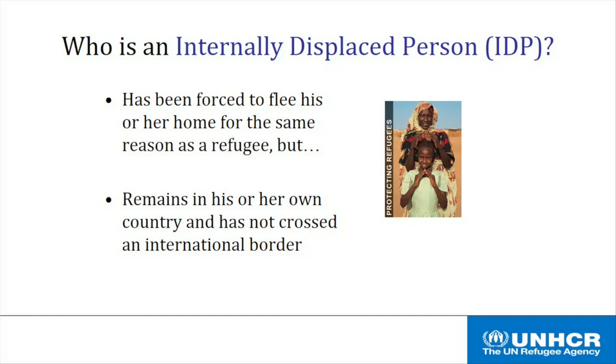Let's talk briefly about people who are uprooted from their homes and have the same fears that refugees have, but for one reason or another haven't crossed an international border. These are what we call internally displaced persons, or IDPs. IDPs are still inside the borders of their home country, but are very much like refugees in other ways, and they likewise need protection and assistance. Because IDPs are still in their home country, that country is responsible for ensuring their rights and protection under human rights obligations. However, governments aren't always able or willing to ensure this protection, so the international community, including UNHCR, often steps in and helps meet the needs of internally displaced persons.